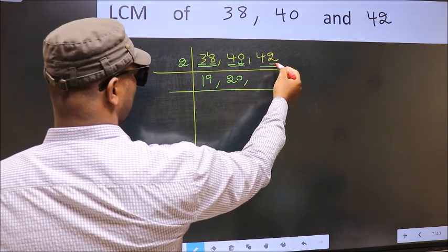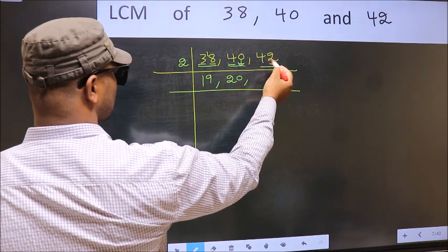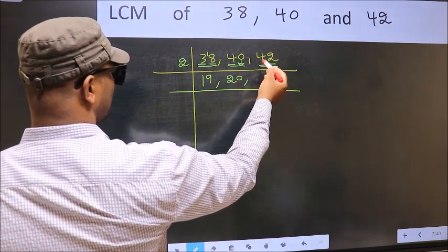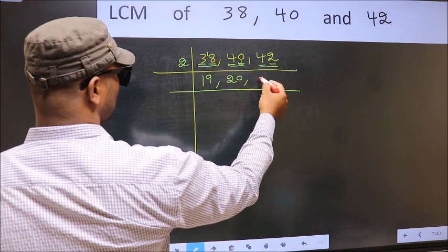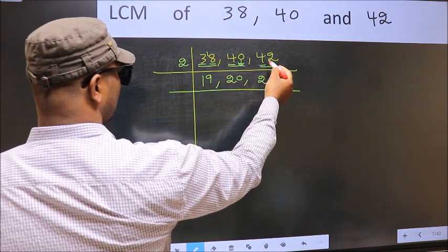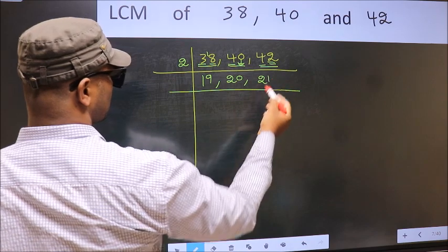The other number 42, last digit 2, even, so this is divisible by 2. First number 4, when do we get 4 in 2 table? 2 times 2 is 4. The other number 2, when do we get 2 in 2 table? 2 times 1 is 2.